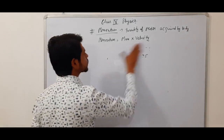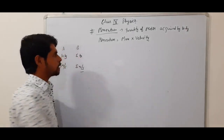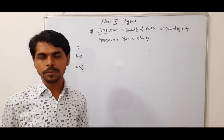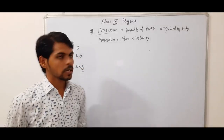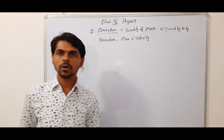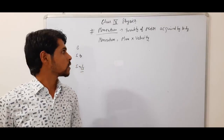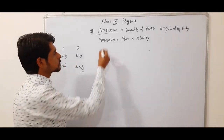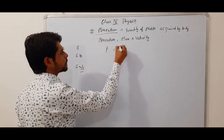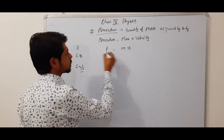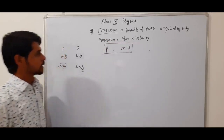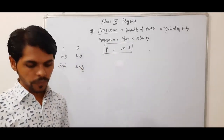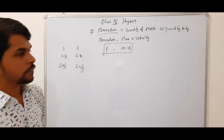Momentum means quantity of motion acquired by the body. Mathematically, momentum is represented as the product of mass and velocity of the body. Symbolically, momentum ka symbol hota hai P, mass ka M aur velocity ka V. Toh momentum ka formula hai: P equals MV. P is momentum, M is mass of the body, V is velocity of the body.